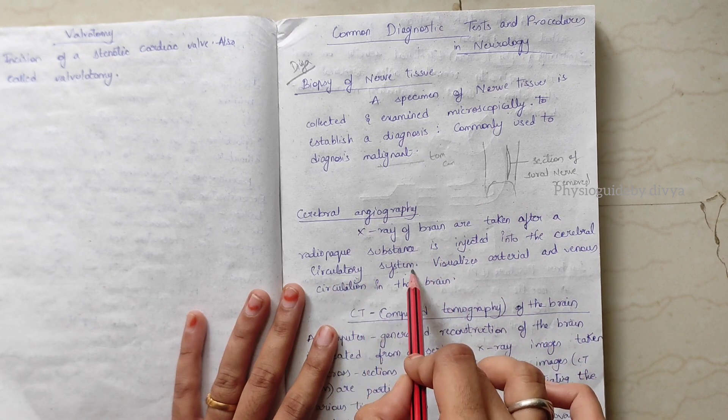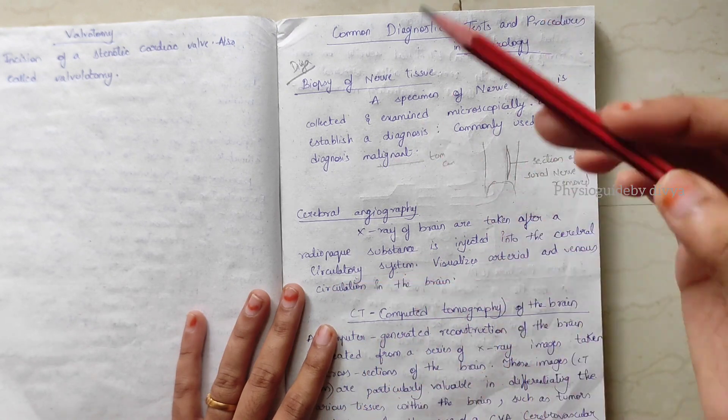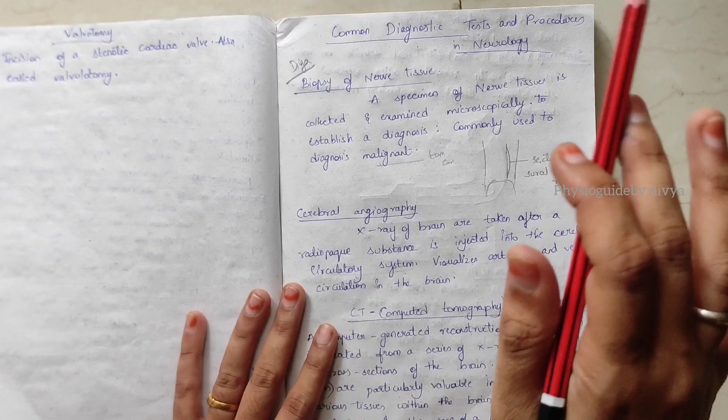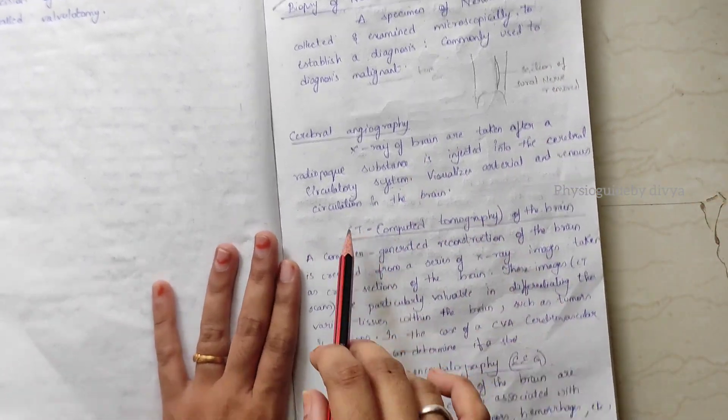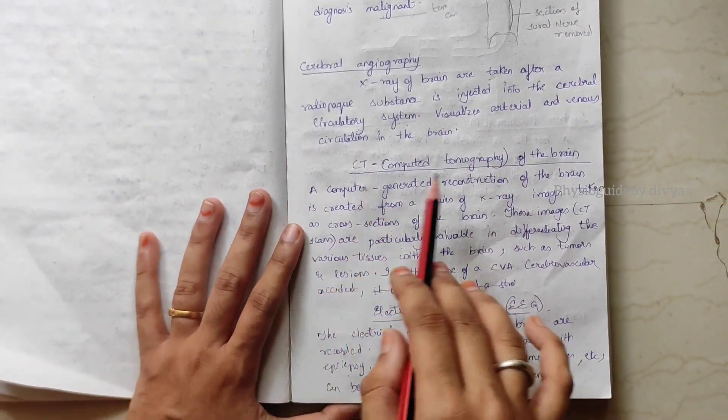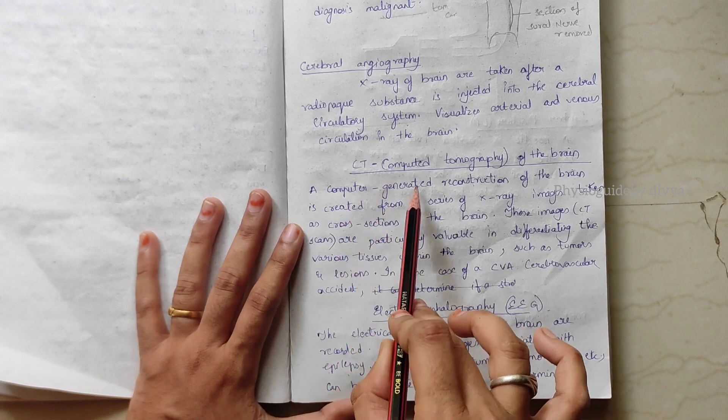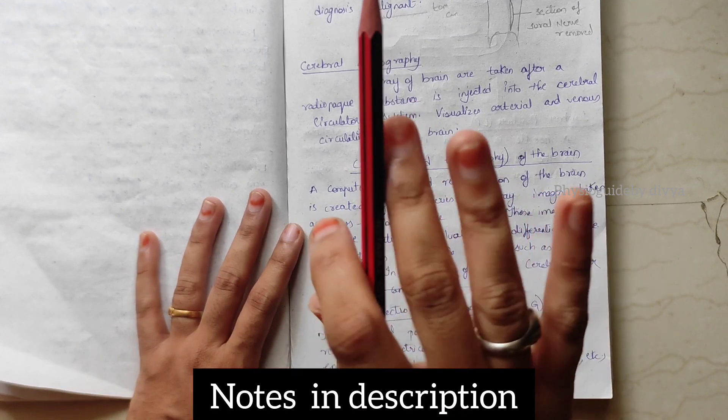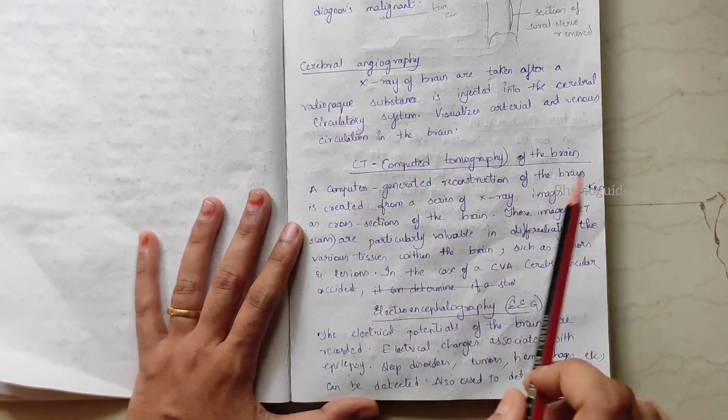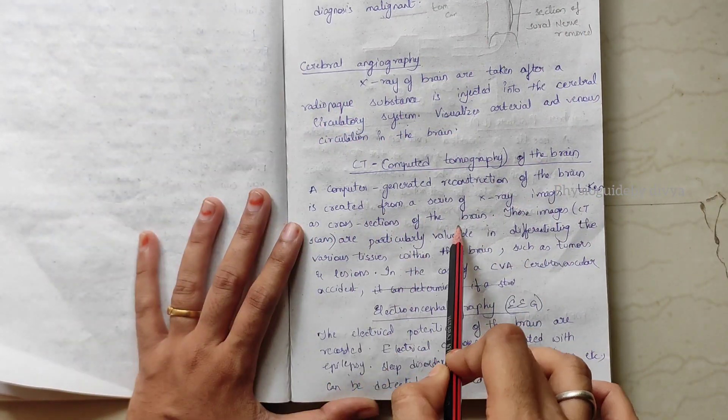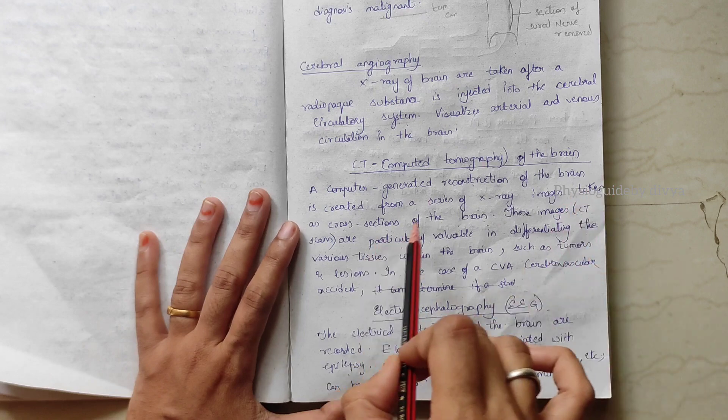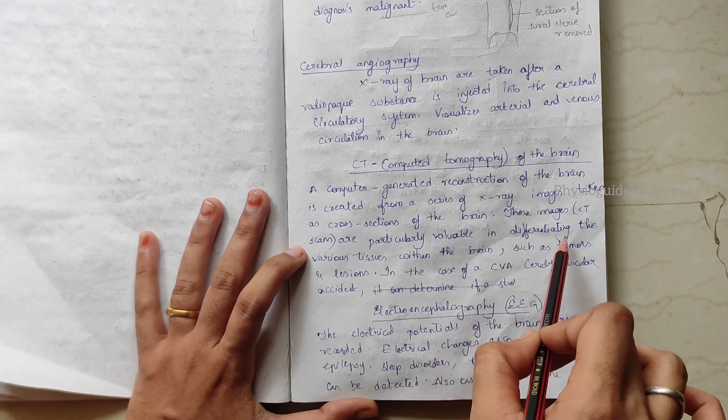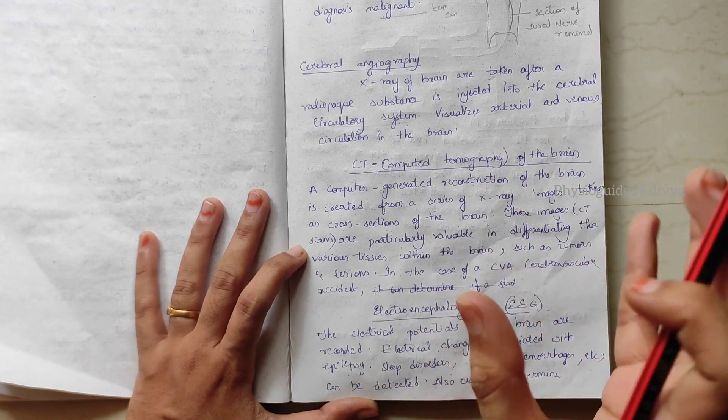This visualizes arteries and venous circulation in the brain. Now CT scan of the brain means a computer generated reconstruction of the brain is created from a series of x-ray images taken in cross-sections of the brain. These images are particularly valuable in differentiating the various tissues within the brain.